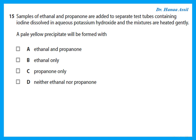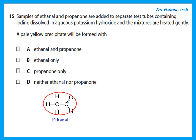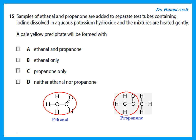Samples of ethanol and propanone are added to separate test tubes containing iodine dissolved in aqueous sodium hydroxide and the mixtures are heated gently. A pale yellow precipitate is produced with compounds that have a methyl group adjacent to a carbonyl. Ethanol has this feature, and propanone also has a methyl group next to a carbonyl, so both give a pale yellow precipitate.